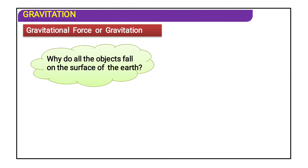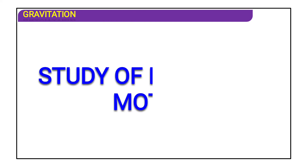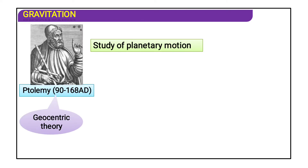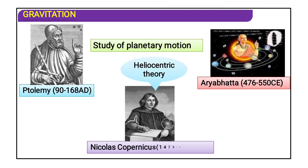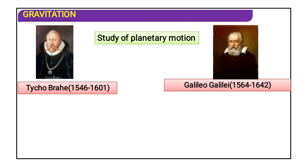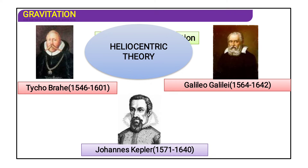To answer why all objects fall on the surface of the earth, we have to discuss historical discoveries about planetary motions. Key contributors include Ptolemy with the geocentric theory, Aryabhata with the heliocentric theory, Nicolas Copernicus also with the heliocentric theory, and Tycho Brahe, Galileo, and Johannes Kepler, who all supported the heliocentric theory.